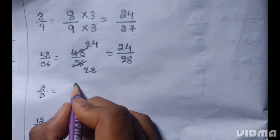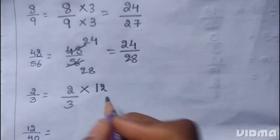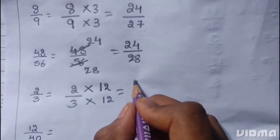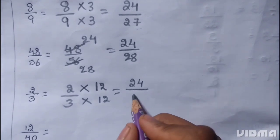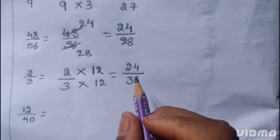2 by 3. 2 multiply 12, 3 multiply 12. 2 12s are 24, 3 12s are 36. 24 is the numerator, 36 is the denominator.